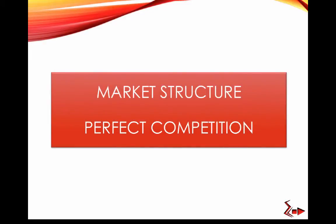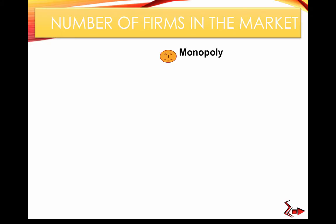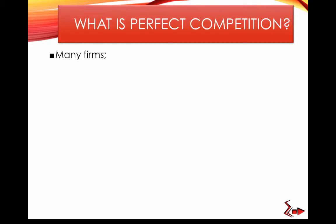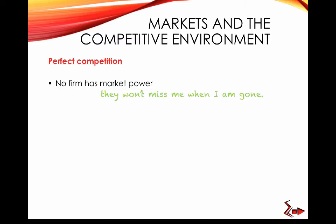Competition is a form of market structure. There are four main ones: monopoly, which is when there's only one firm in the market. The number of firms helps differentiate between market structures — oligopoly has a few firms, monopolistic competition has many firms, and perfect competition has a large number of firms. Other features of perfect competition include no market power, identical products that are substitutes, and no restriction to enter the market.